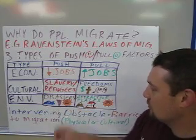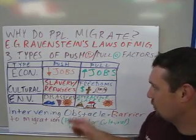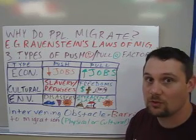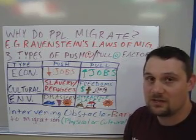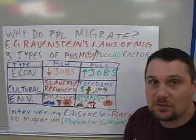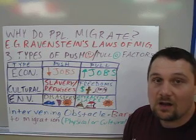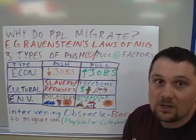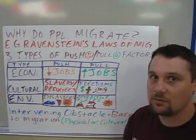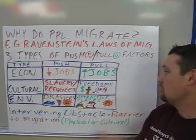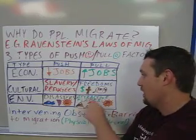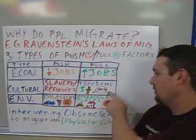Another type of push-pull factor is cultural. The push factors for cultural migration would be slavery — people who are physically forced — or refugees. Refugees are people who are fleeing something, most of the time because of war or oppressive governments that push them away from their homeland. Some pull factors for culture are freedoms: economic freedoms, religious freedoms, and freedom of speech.